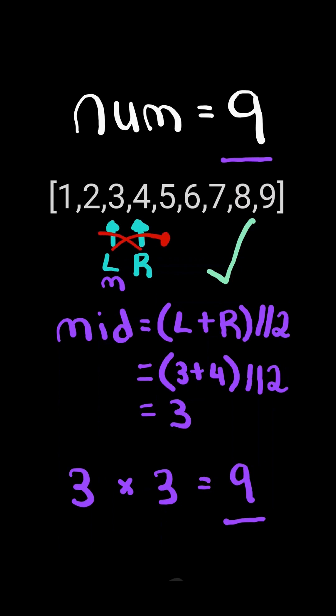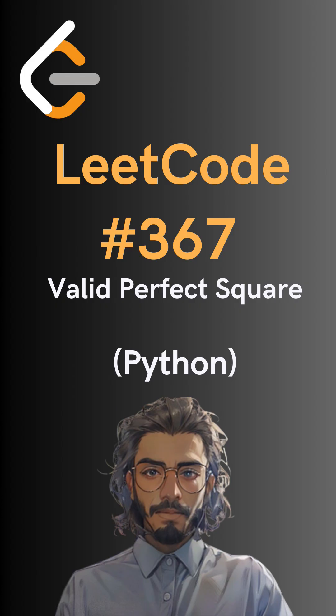Note that if L and R were to ever cross each other, we would return false. And here's the code to do so. Please like and follow for more.